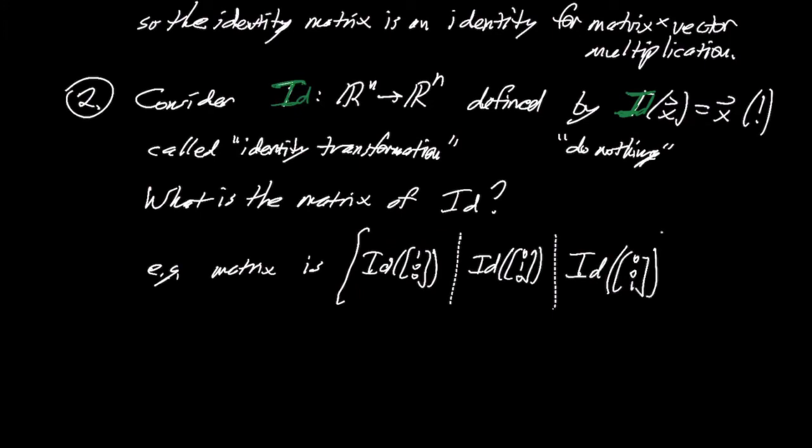So you just apply the transformation to the three standard basis vectors, right? We've seen that over and over again, that's how you build the matrix. But the identity does nothing, so that immediately gives you [1,0,0] there, [0,1,0] there, and [0,0,1], and so it's the identity matrix.